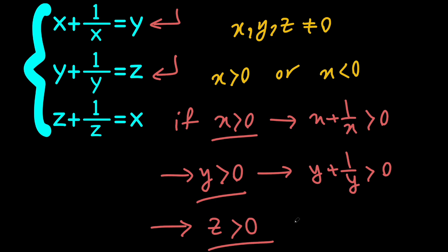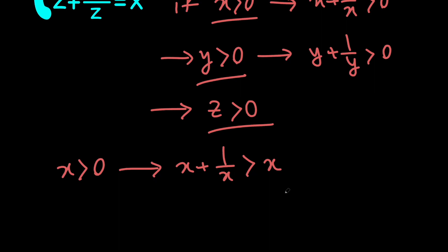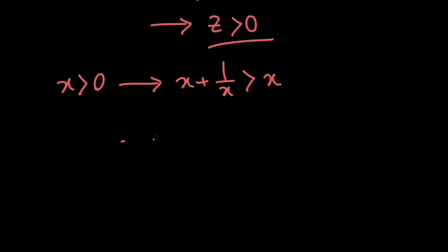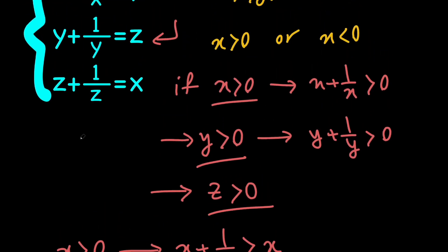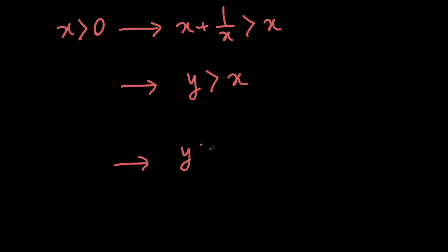Whenever y is positive, we can say that y plus 1 over y is positive, and since y plus 1 over y is z, that means z is going to be positive. So whenever x is positive, both y and z are going to be positive. Next, notice that whenever x is positive, we can say that x plus 1 over x is greater than x. But remember that x plus 1 over x is y, so y is greater than x. And notice that x is z plus 1 over z, so y is greater than z plus 1 over z.